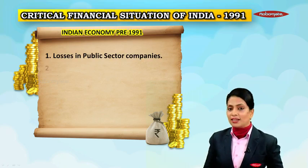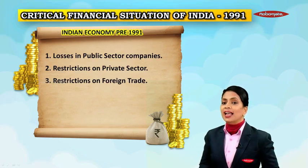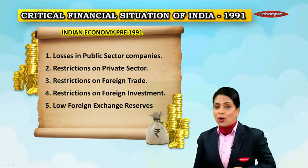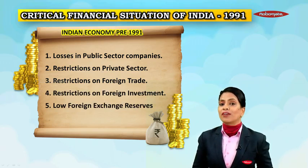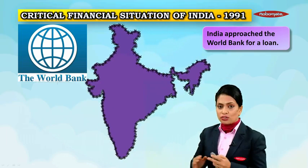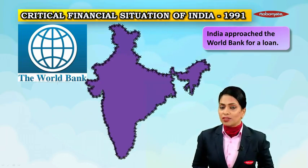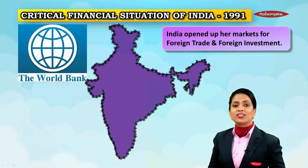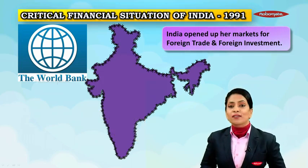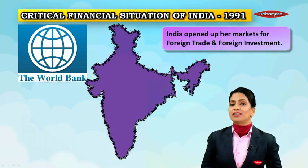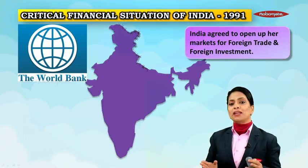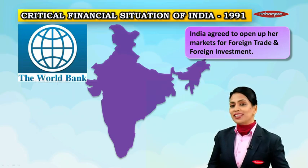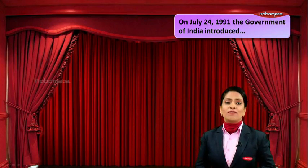Summing up India's economy in the pre-1991 era: number one, we had losses in public sector companies; we had restrictions on the private sector; restrictions on foreign trade; restrictions on foreign investment; and a problem of low forex reserves. India approached the World Bank to bail us out and asked for a loan. The World Bank agreed, but on the condition that India open up her markets for foreign trade and foreign investment. India agreed to open up her markets.